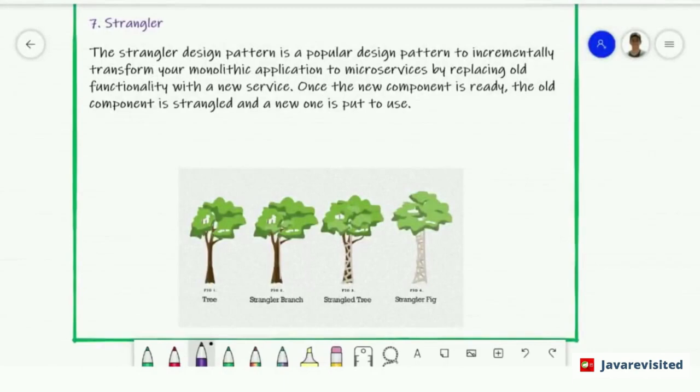Pattern number seven is Strangler. The Strangler design pattern is a popular design pattern to incrementally transform your monolithic application to microservices by replacing old functionality with a new service. Once the new component is ready, the old component is strangled and a new one is put to use.